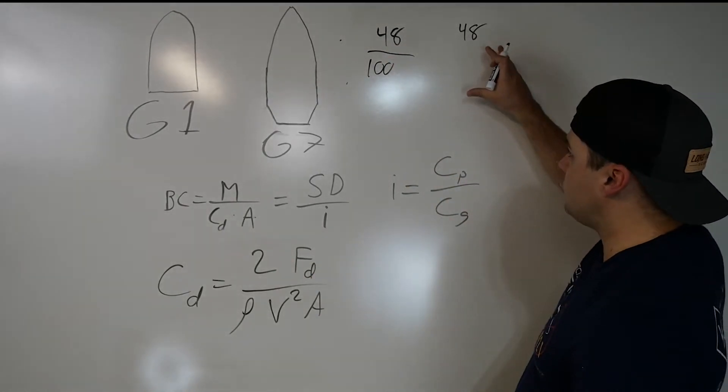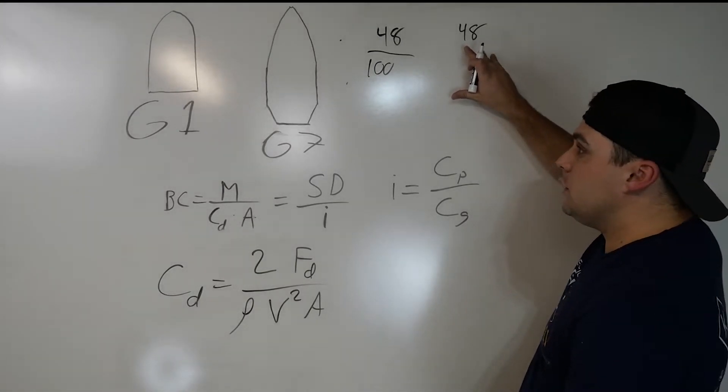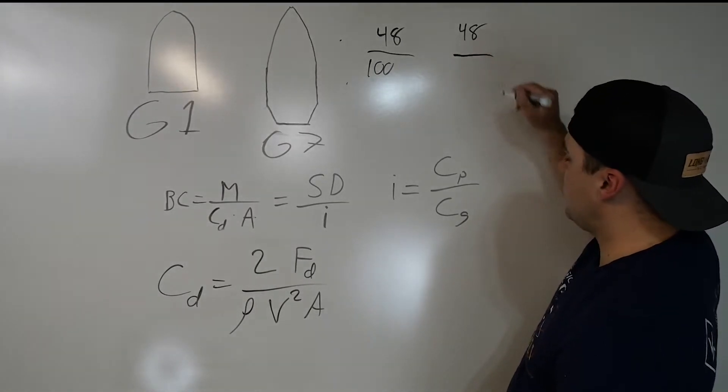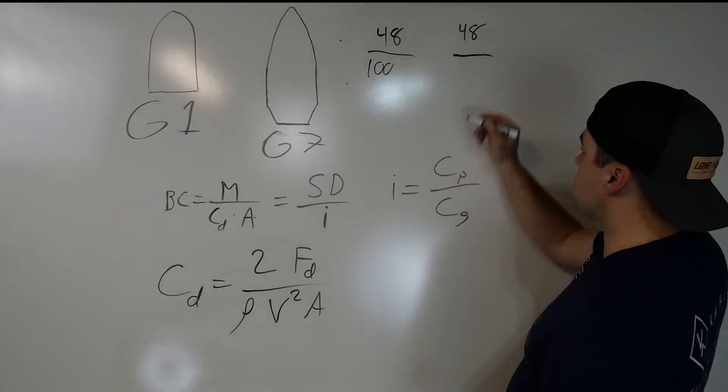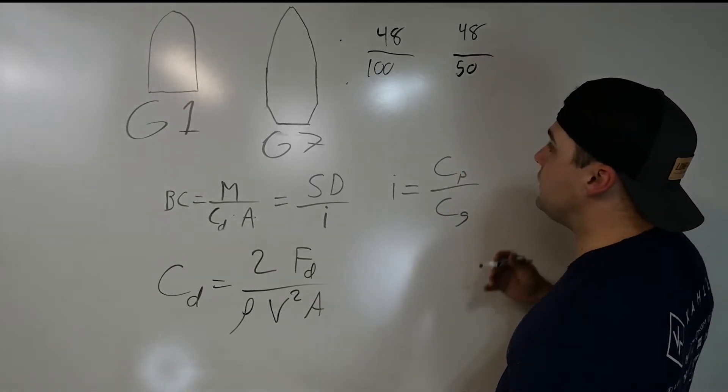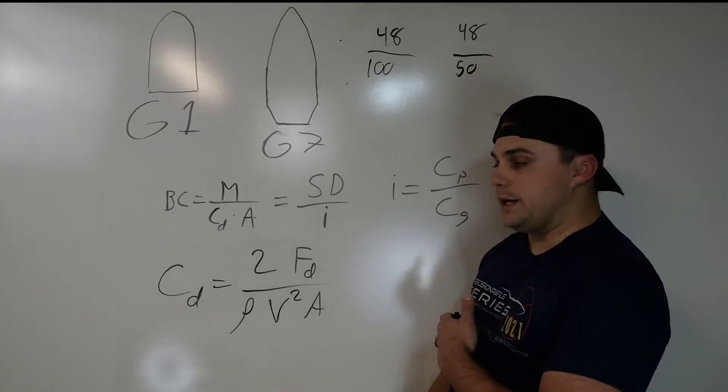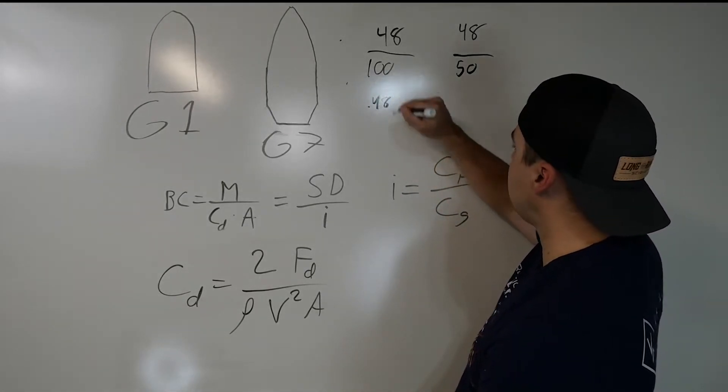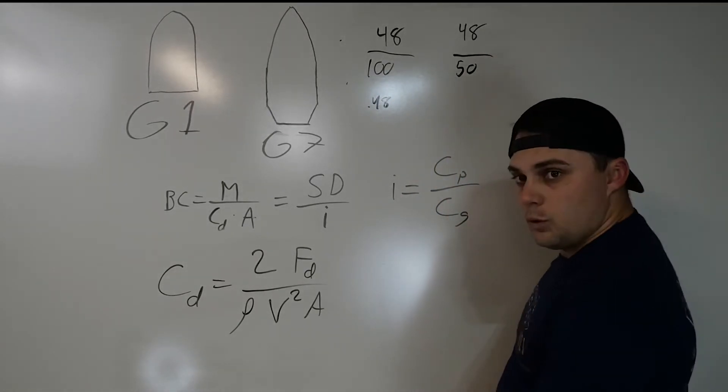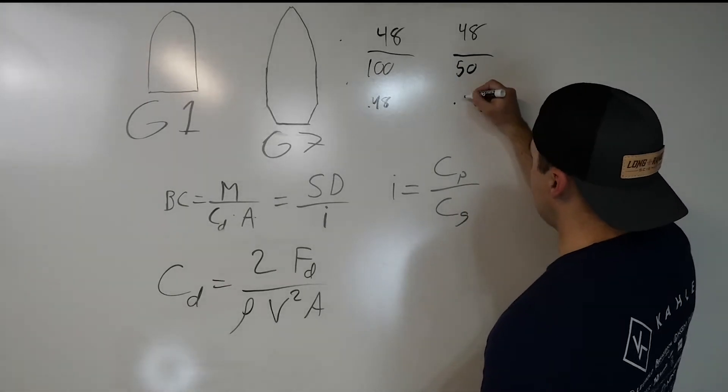So now let's come over here and we're going to compare it to a G7 profile bullet, which is going to have a much better drag factor. Let's just call that one 50. So what that gives you is that gives you a G1 form factor of 0.48 and a G7 form factor of 0.96.